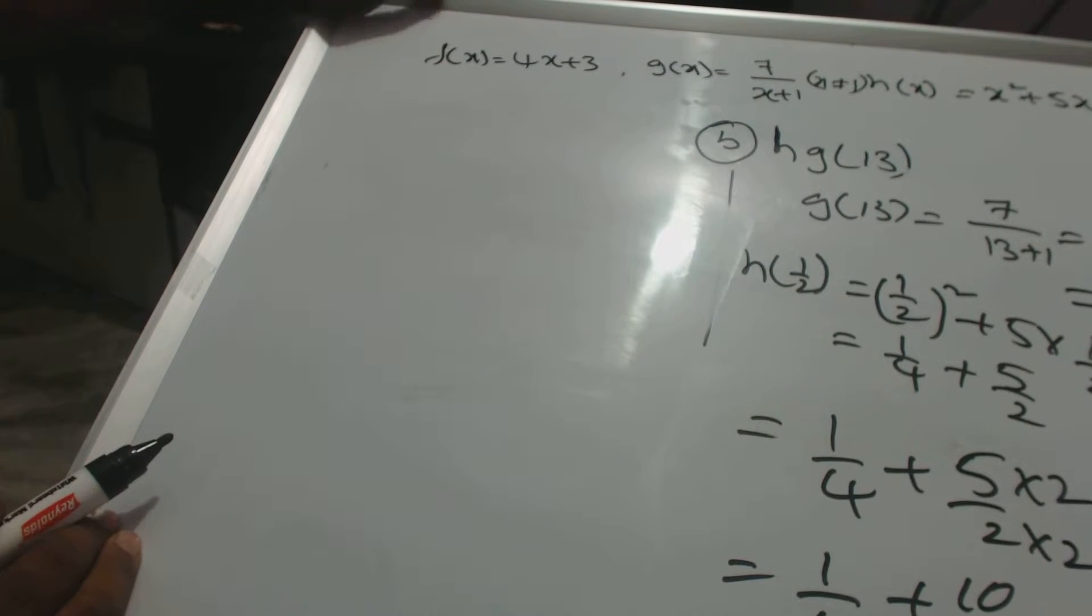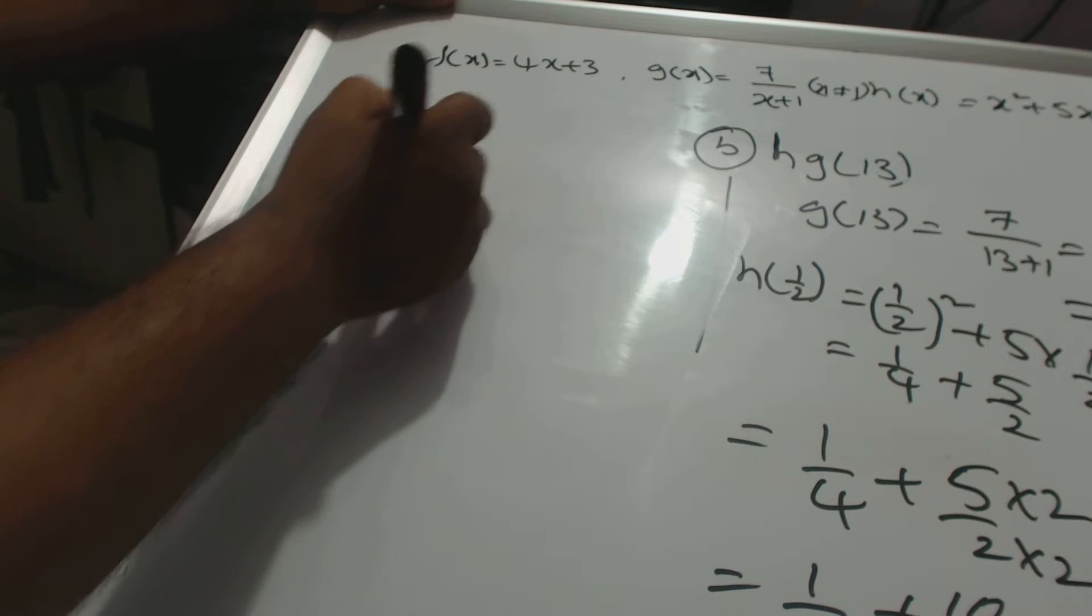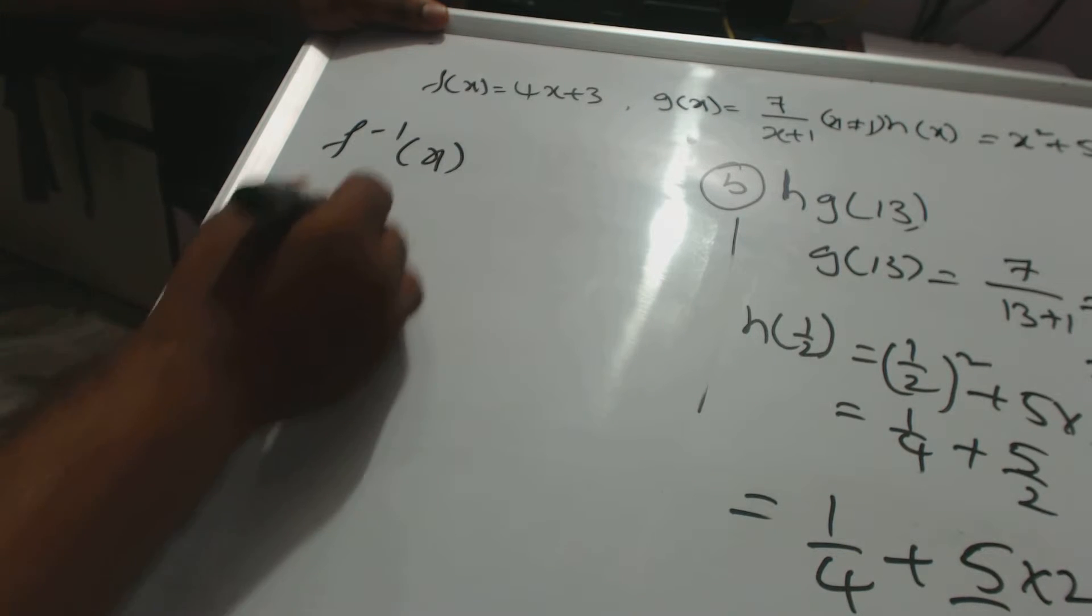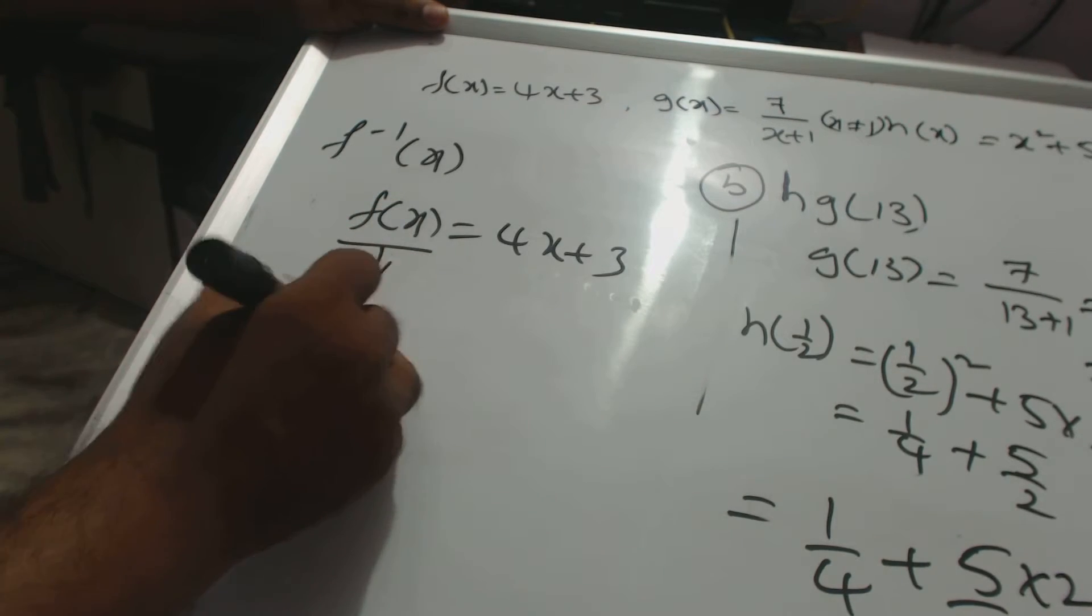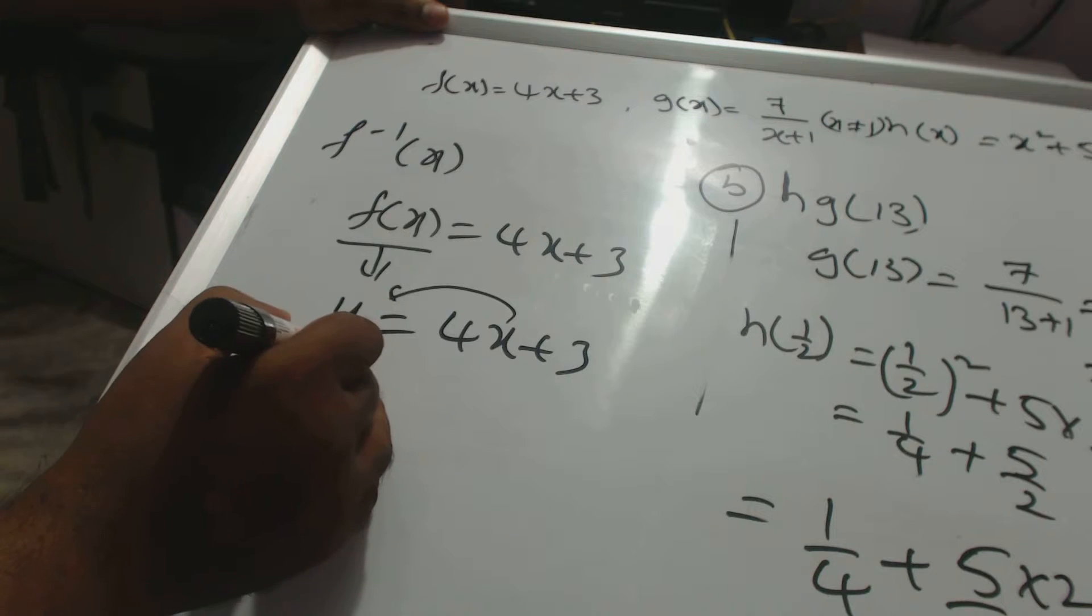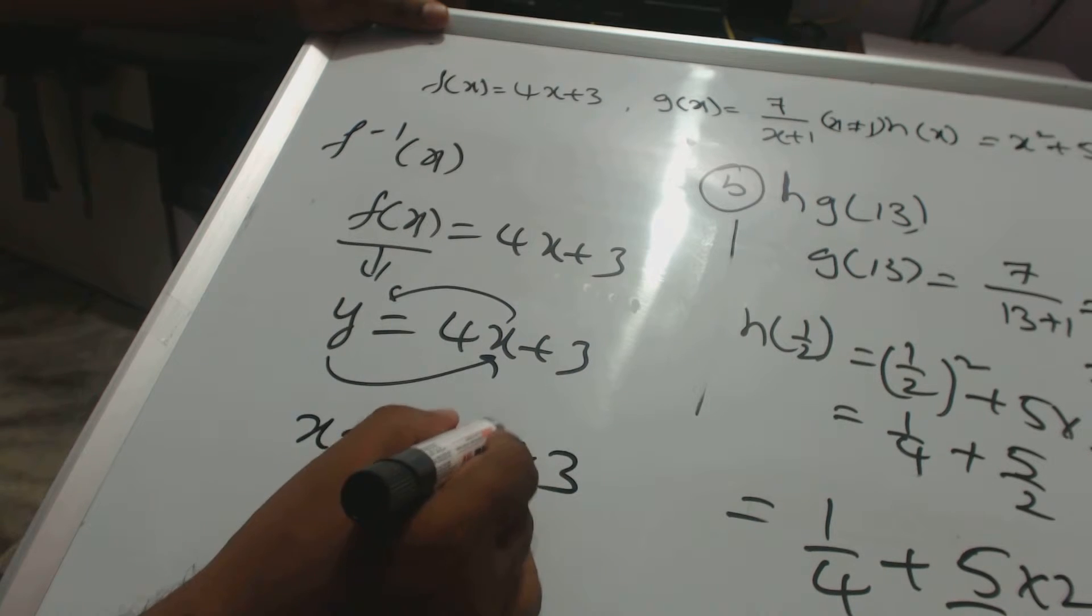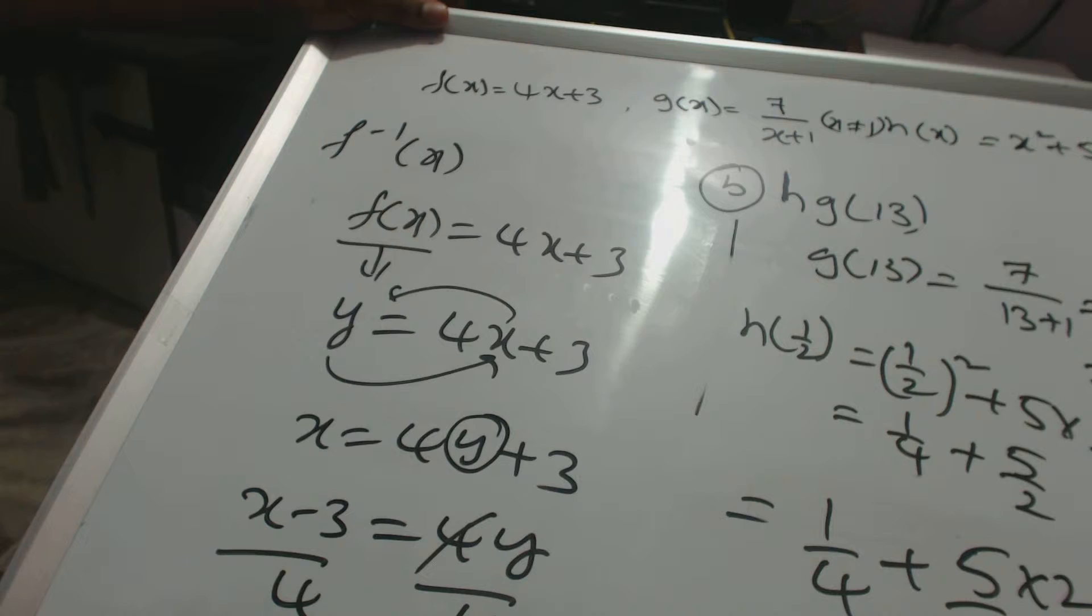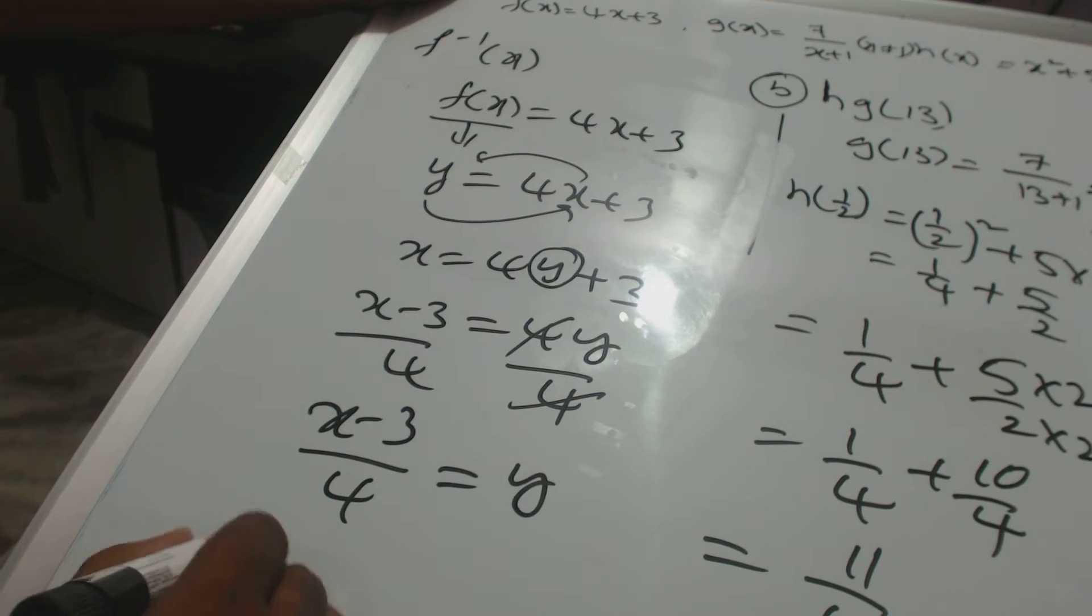How do we find f⁻¹(x)? First, take f(x) = 4x + 3 and write it as y = 4x + 3. Then swap x and y: x = 4y + 3. Now make y the subject. Subtract 3 from both sides: x - 3 = 4y. Divide by 4: y = (x - 3)/4. Therefore, f⁻¹(x) = (x - 3)/4.